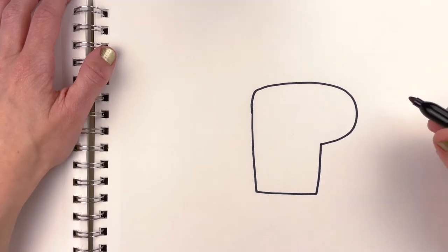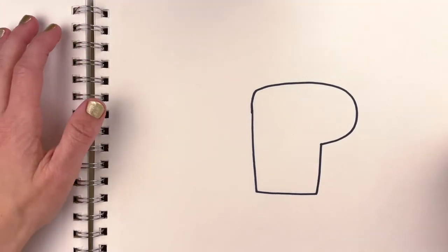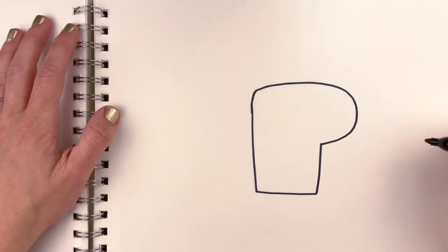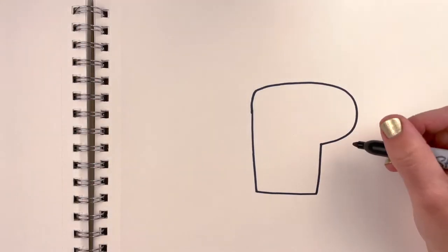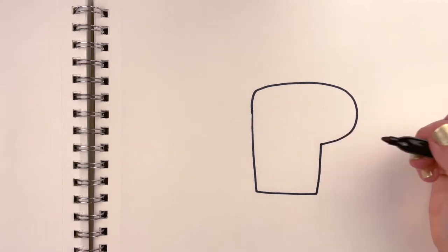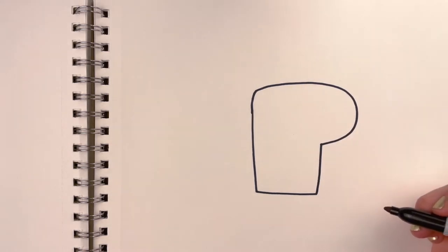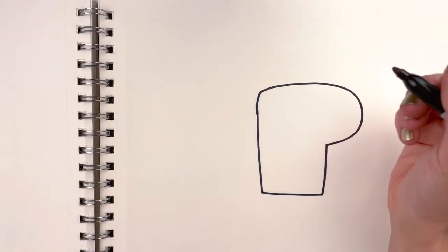So I start with this upside down sock boot, whatever you would like to call it. I use this a lot in my animal drawings. I just like this shape. It could be a lot of different things like a squirrel or a capybara. So we have this shape here, then I'm going to add my eyes.